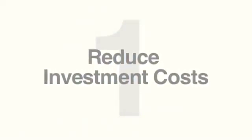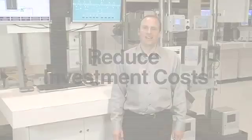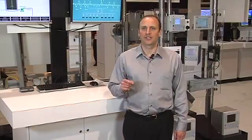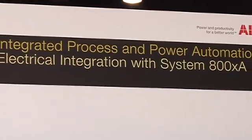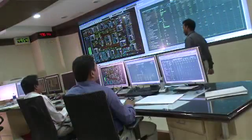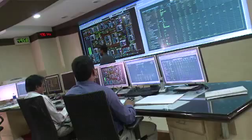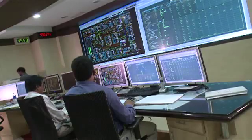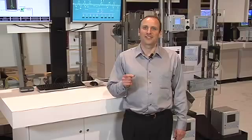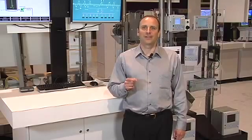The first benefit is reducing your investment costs. You can reduce your system footprint size with one integrated system. No longer will you have to have two separate workplaces for your process system and your power automation system. You can also significantly reduce your wiring using industrial Ethernet standards such as IEC 61850 and PROFINET.